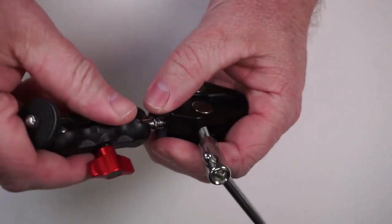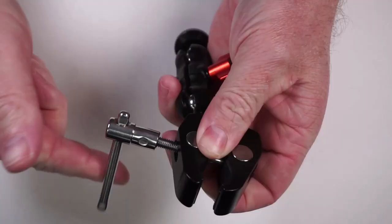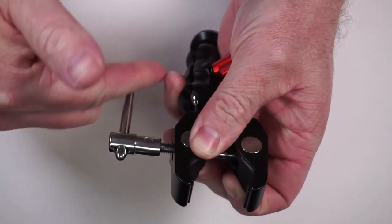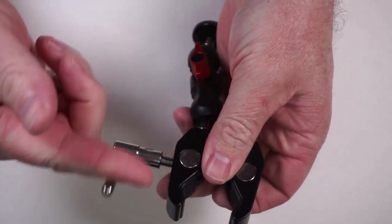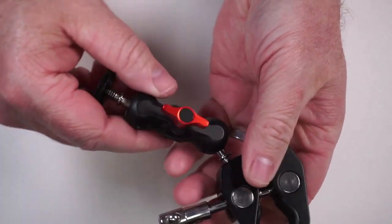This will just thread in here and you turn it. To loosen this up, you turn it like this, and then when you're ready to attach it to the pole, you can tighten it back up again.